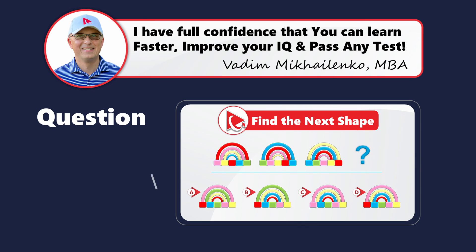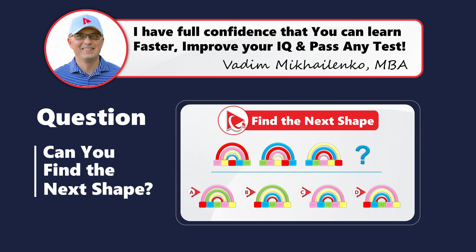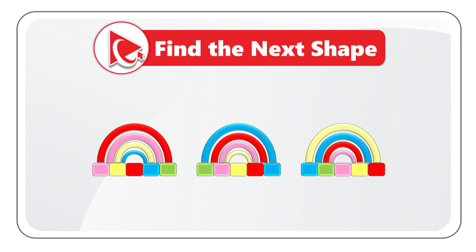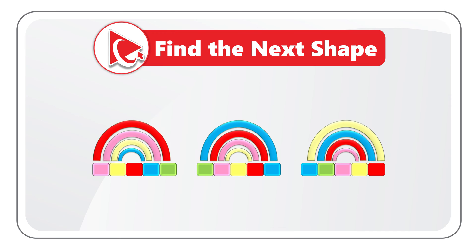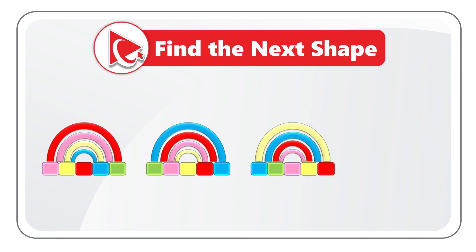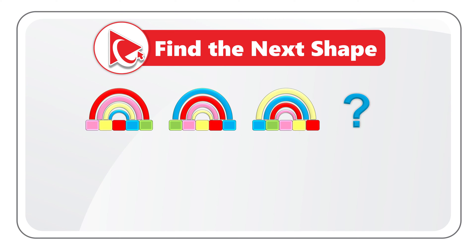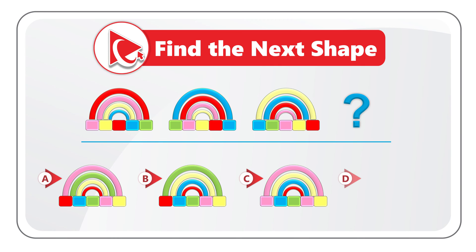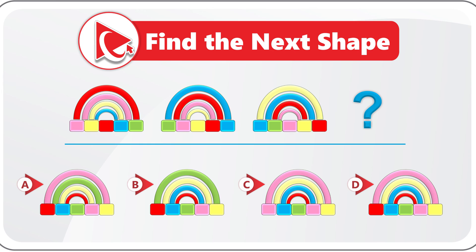Here's a very unusual question which tests your analytical skills, pattern recognition skills, and spatial reasoning. You're presented with three shapes, each featuring a rainbow of four sections on top and five squares at the bottom. Each shape has a unique set of colors. You need to detect the pattern and recognize shape number four out of four possible choices: A, B, C, and D. Take a close look to see if you can come up with the answer.